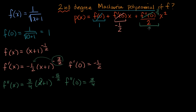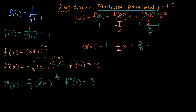So our second degree Maclaurin polynomial P of x is equal to one minus one-half x plus three-eighths x squared. And we are done — we have our second degree Maclaurin polynomial of f, which can be used to provide an approximation for our function, especially for x's near zero.